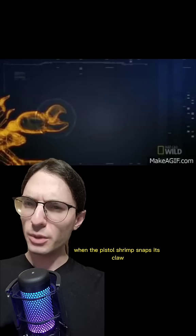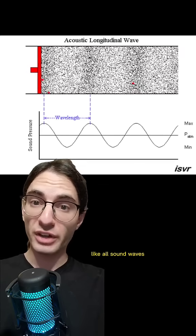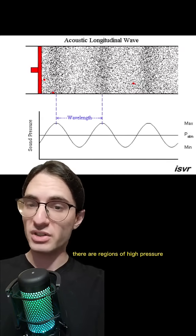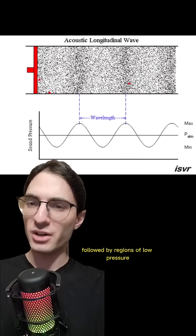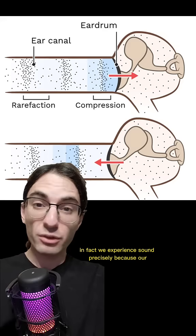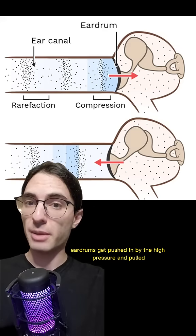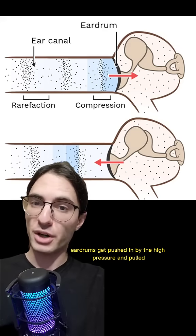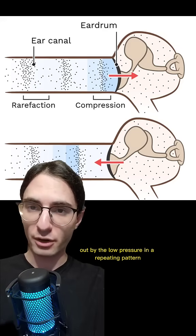When the pistol shrimp snaps its claw, it shoots out a high-power sound wave. Like all sound waves, there are regions of high pressure followed by regions of low pressure. In fact, we experience sound precisely because our eardrums get pushed in by the high pressure and pulled out by the low pressure in a repeating pattern.